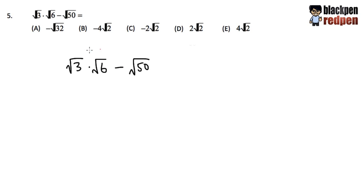For question number 5, we are working with square root numbers. Here we have square root 3 times square root 6 minus square root 50. The important thing here is we need to know what are the operations of square roots that we can do. As we can see, here we have a multiplication. Whenever we are multiplying two square root numbers, we actually get to multiply the numbers inside.